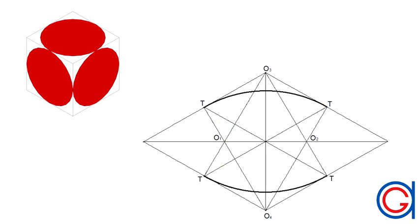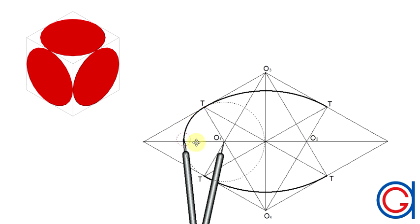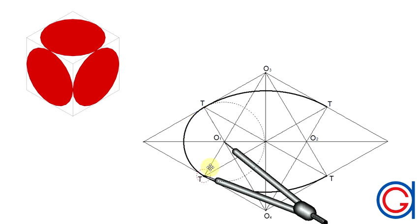And again with our compass set on point O1 and length O1 t we scribe an arc to the left joining the two tangent points.